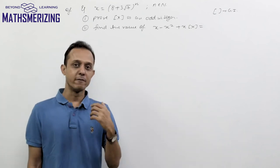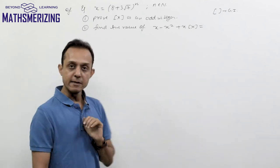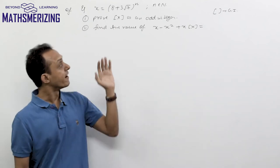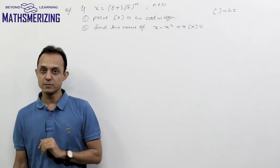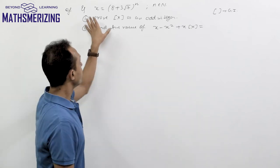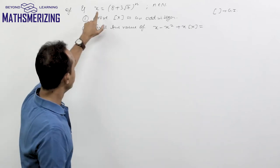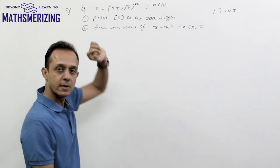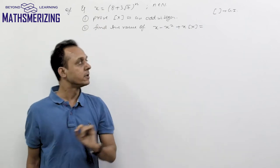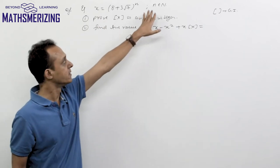There will be questions in binomial theorem where we need to use the greatest integer function and fractional part function to solve certain problems. For example, a question is given as x equals (8 + 3√7) to the power n, where n is a natural number.